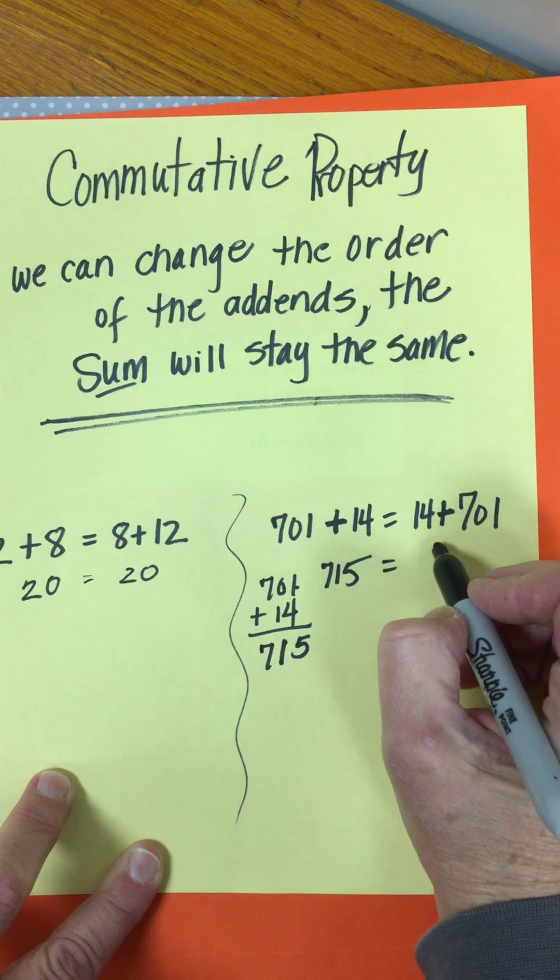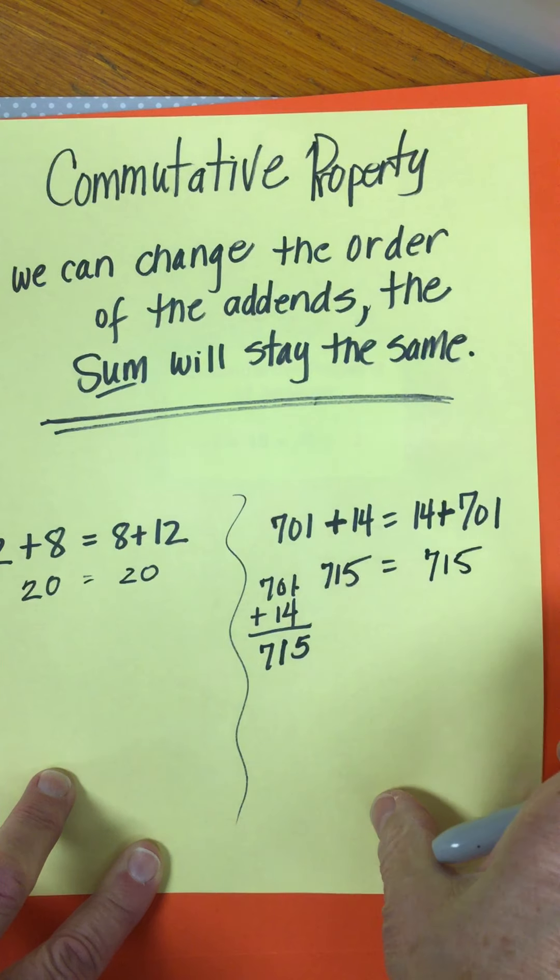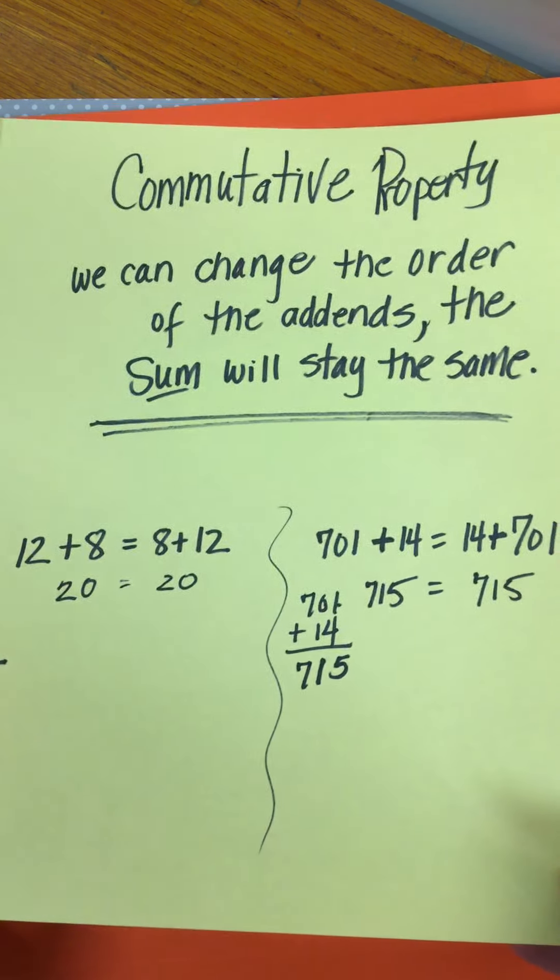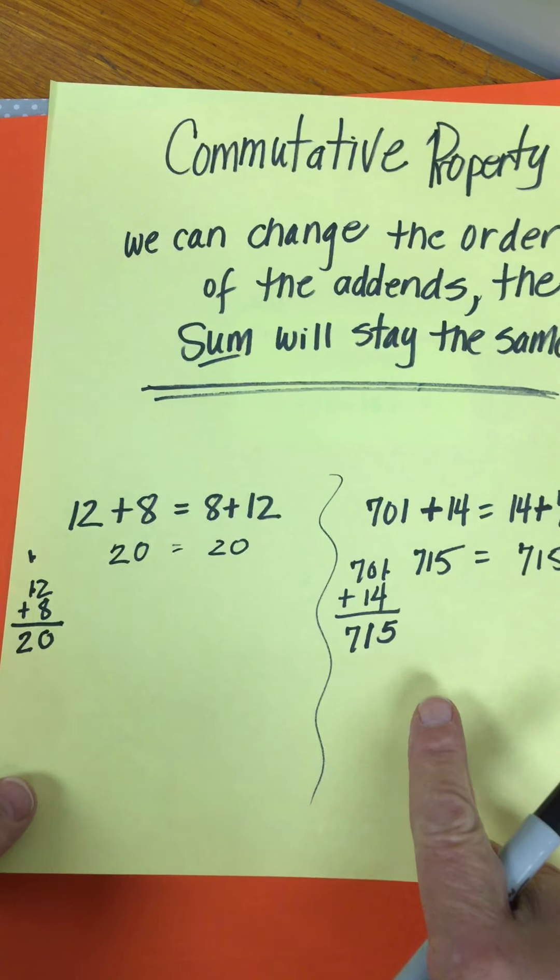But I'm just changing the order here. I have the 14 first so it's still 715. Okay, that's commutative property. Changing the order of the addends but the sum is the total. And that's called balancing it.